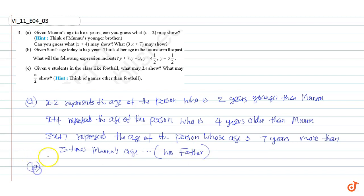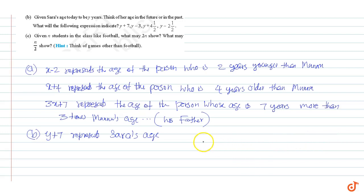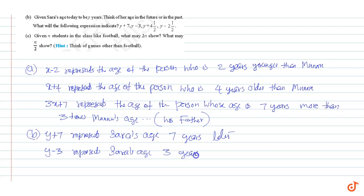Part B: given Sara's age today to be y years, think of her age in the future or in the past. What will the following expressions indicate? y plus 7 represents Sara's age 7 years from now. y minus 3 represents Sara's age 3 years ago.